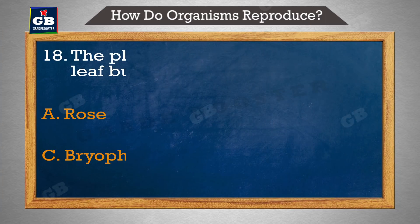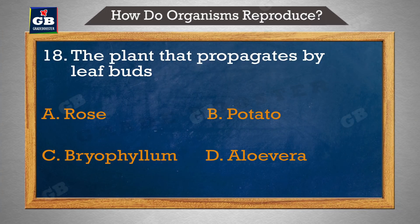The plant that propagates by leaf buds is — paudhe jo leaf buds se phailta hai. A. Rose, B. Potato, C. Bryophyllum, D. Aloe Vera.